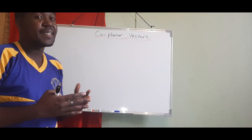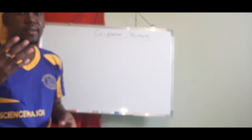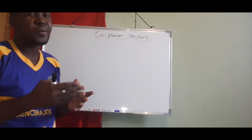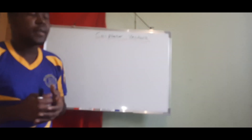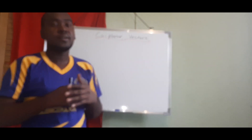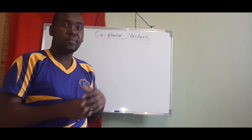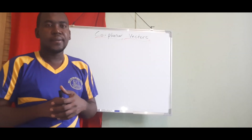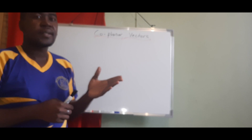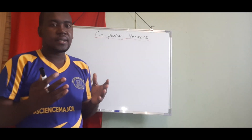Vectors are quantities that have magnitude and direction. Magnitude means the size — the number that you write — and direction means what direction the quantity is going. Scalar quantities have just magnitude or size. Examples of scalars include time, temperature, length, and current. Vector quantities include momentum, force, acceleration, and displacement.